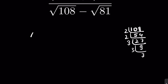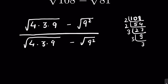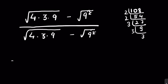We can write 108 as 4 × 3 × 9 under the square root, and 81 as 9² under the square root. So the expression becomes: √(4×3×9) + √(9²) upon √(4×3×9) − √(9²). The square root cancels with the square for the 9² term.